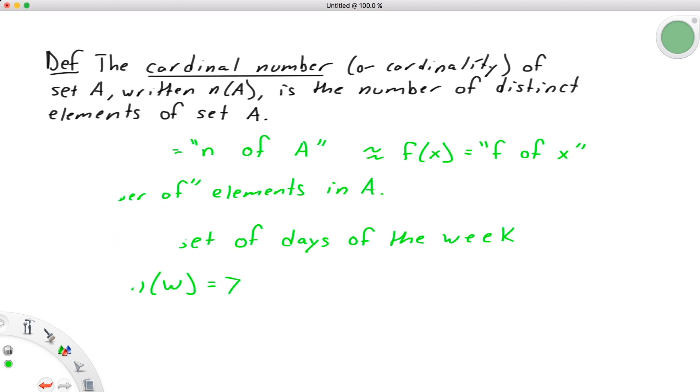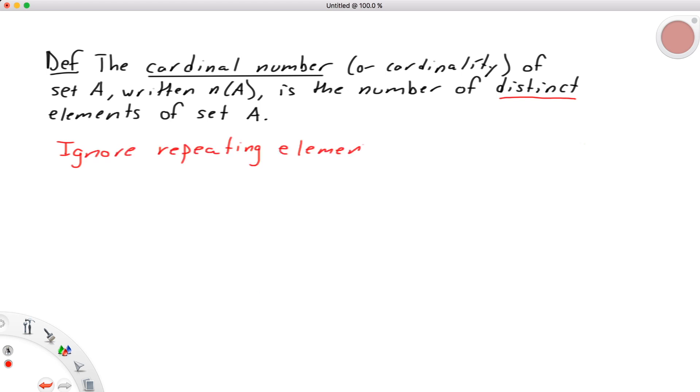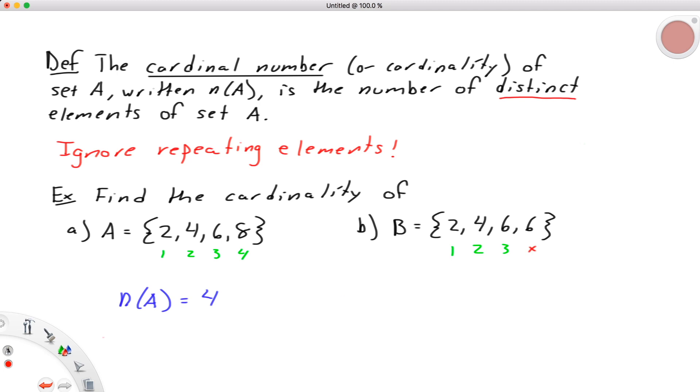Let's pay attention though to the specific wording of this definition. In particular, I want to emphasize this phrase distinct elements. Essentially, this means that we ignore repeating elements. For example, if we were given the set A = {2, 4, 6, 8}, then n(A) = 4, but if we were given the set B = {2, 4, 6, 6}, then n(B) is actually equal to 3, since there are only 3 distinct elements. We don't count the 6 twice.